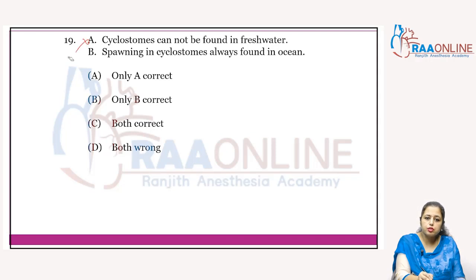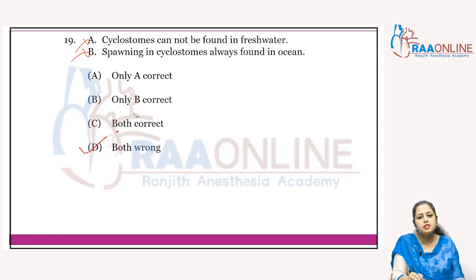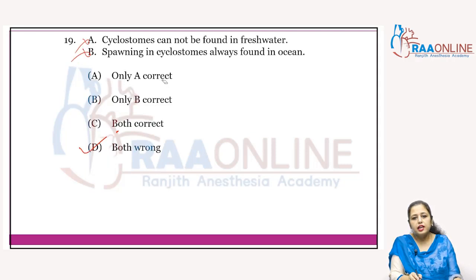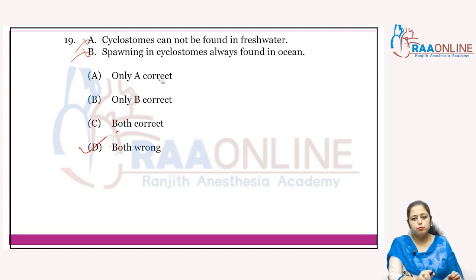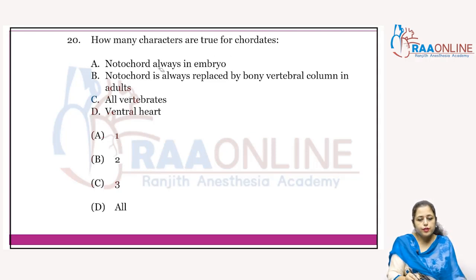Cyclostomata cannot be found in freshwater — that statement is wrong. Spawning in Cyclostomata always occurs in the sea — no, it occurs in freshwater. Both statements are wrong, so the answer is D. They are both marine and freshwater animals.